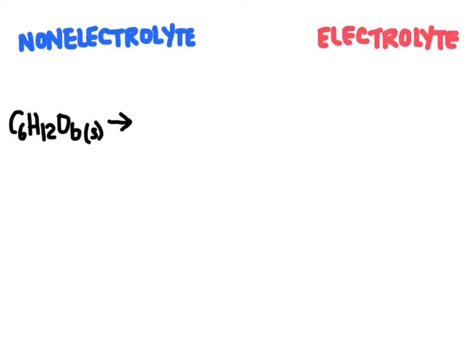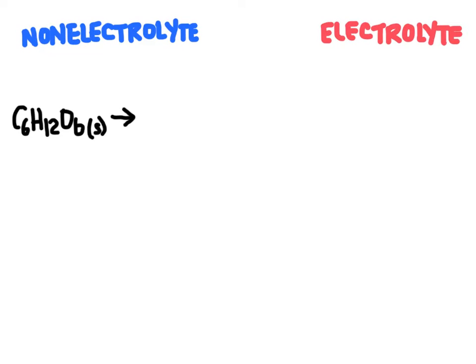There are two types of solutes that we can dissolve into a solvent. The first type is called a non-electrolyte, and a non-electrolyte is something that does not conduct electricity. Generally it's going to be a covalent compound, or in other words a molecular compound. This right here is glucose — it's a molecular compound because there are no metals; it's all non-metals.